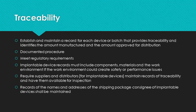Traceability has been mentioned in several other videos. The requirements of ISO 13485 are straightforward: your organization must establish and maintain a record for each device or batch, providing traceability to materials and components through the manufacturing process and to the delivery consignee. You must document how traceability will be performed in a procedure, and your procedure must meet regulatory requirements. You must record the amount of manufactured product and the amount approved for distribution.